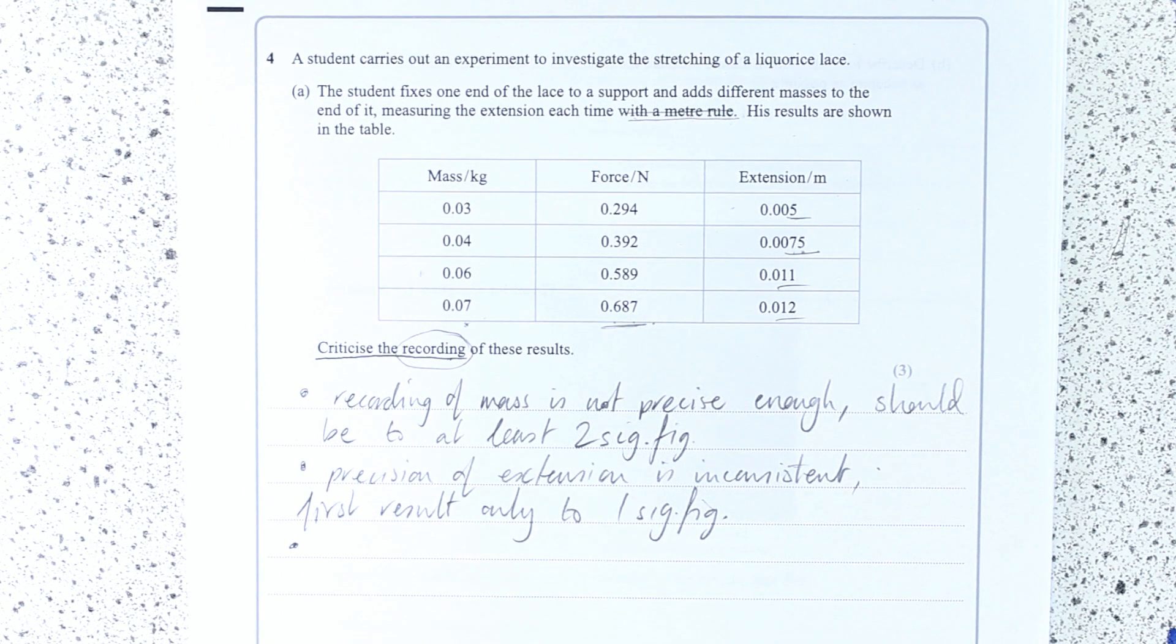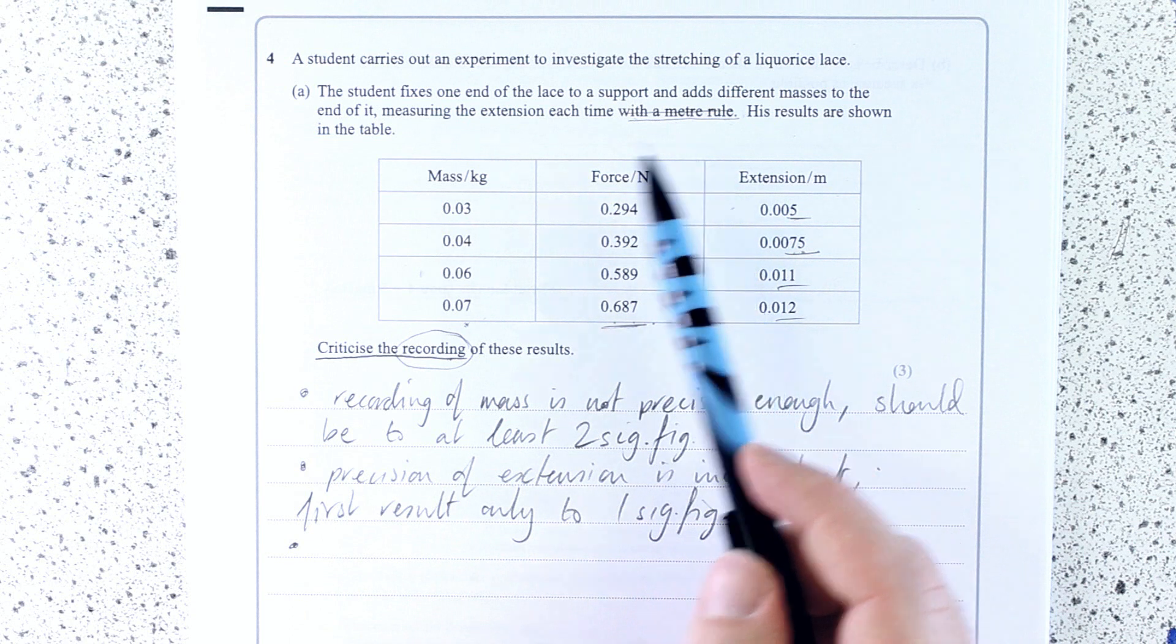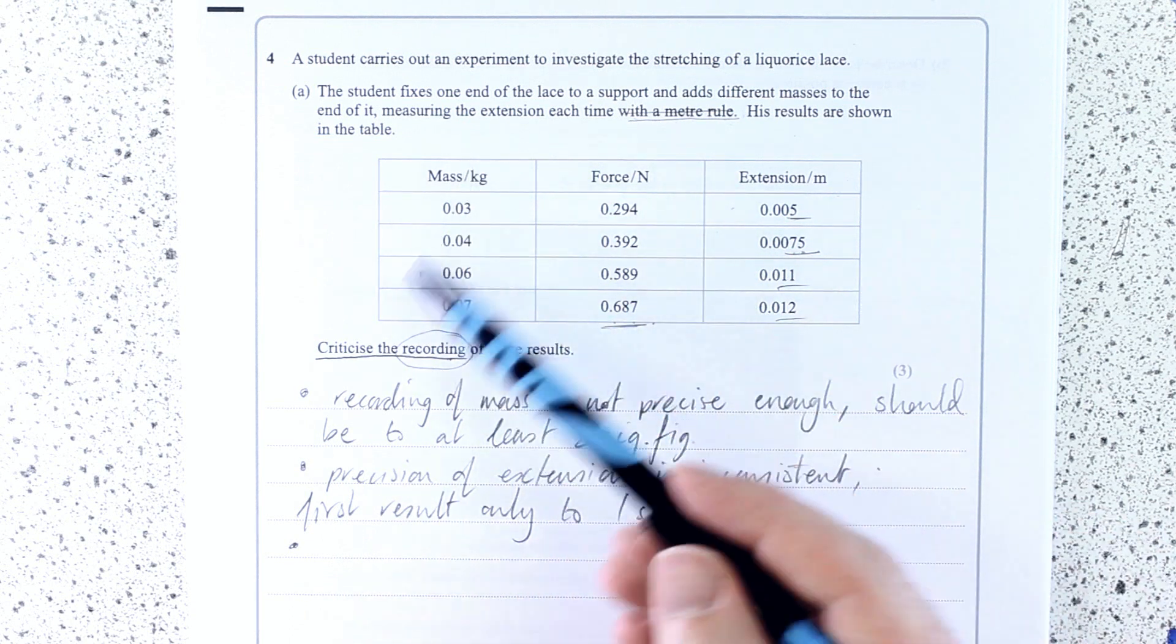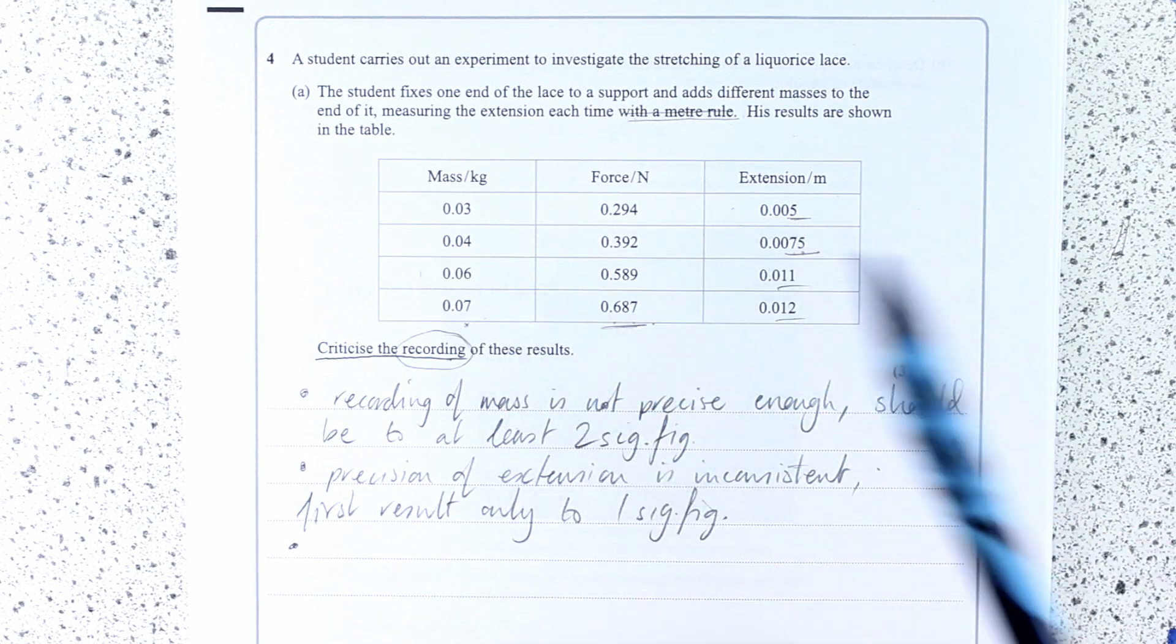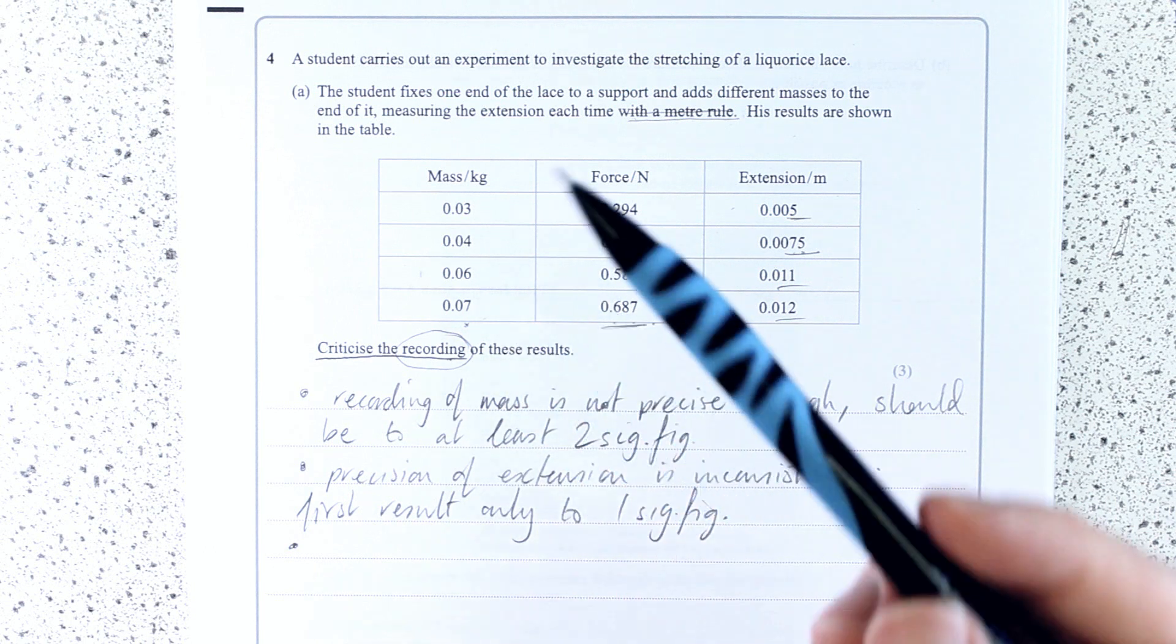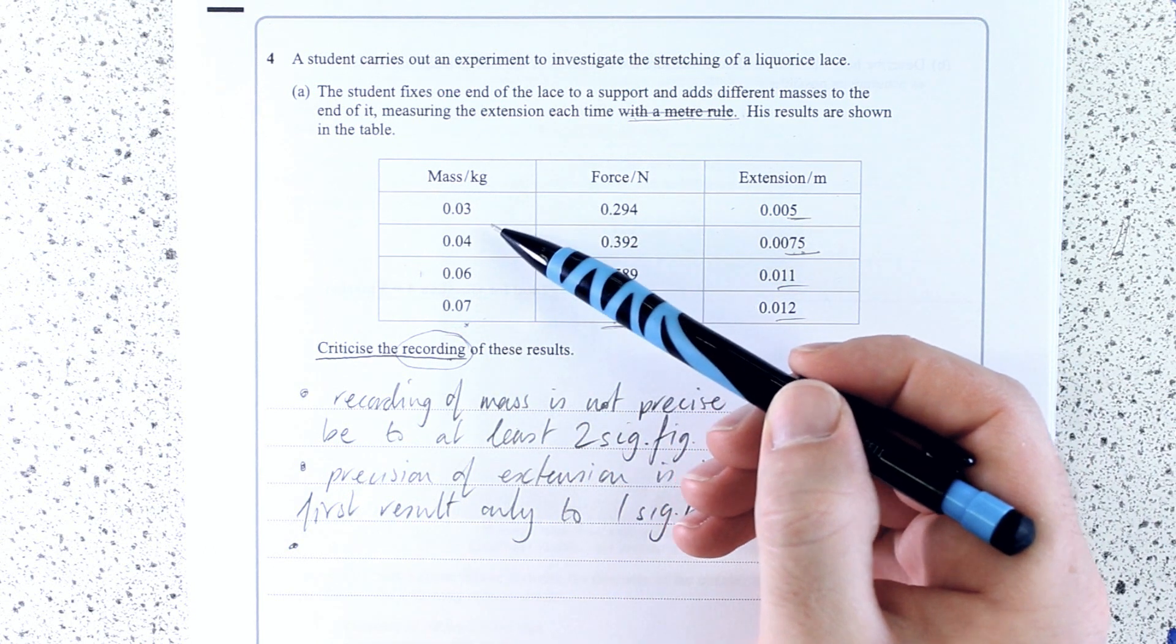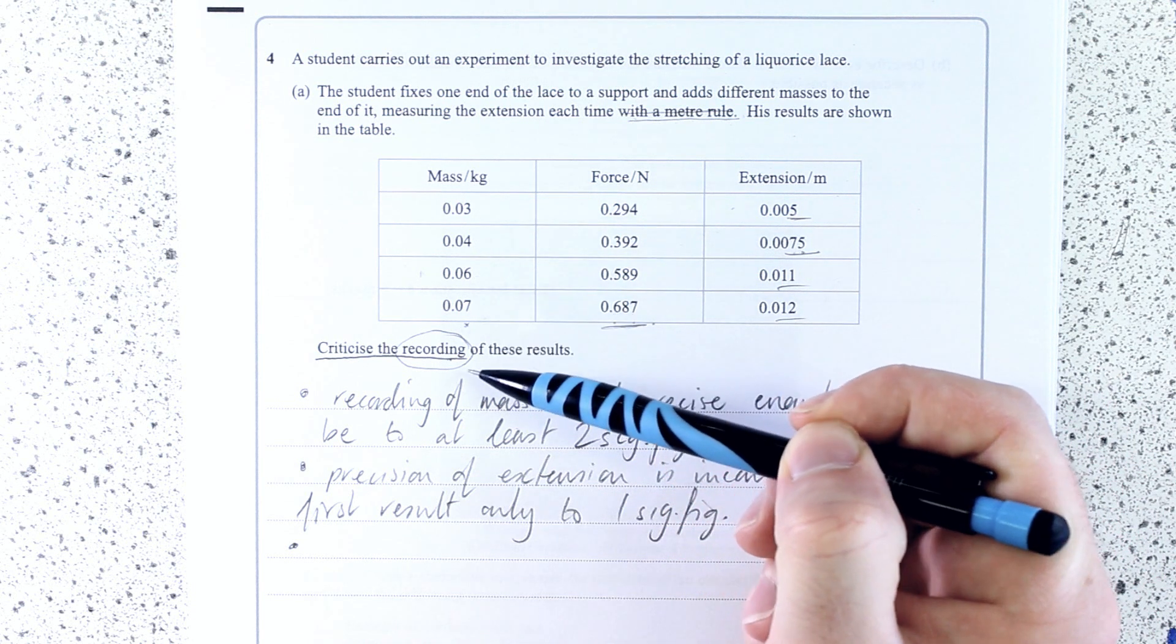Next thing then, what else have we got? Well, they've actually said that there's no evidence of repeat readings. And I don't like that because even though it is not about the method, we wouldn't repeatedly extend a lace because we don't know whether, when I first go, we don't know whether we are at the limit of proportionality, the elastic limit, or not. They have compensated for that.